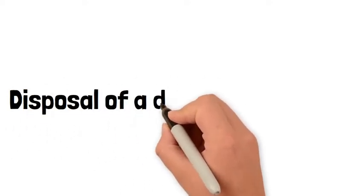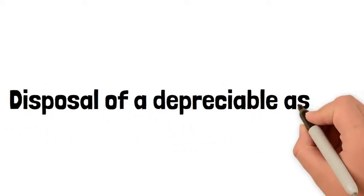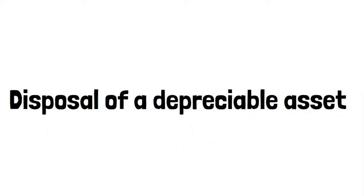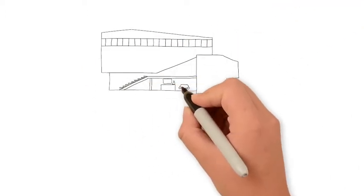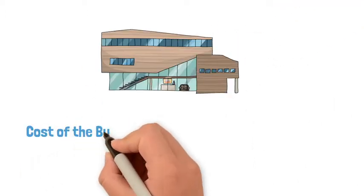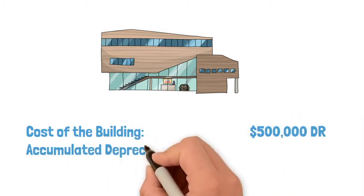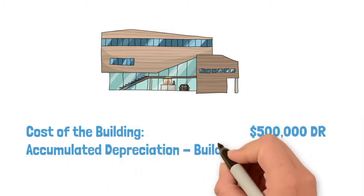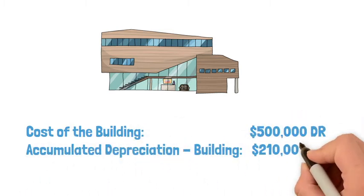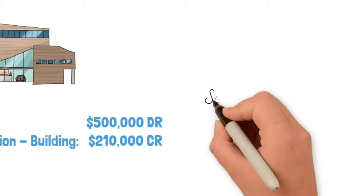In this video, I'm going to show you the general entry for disposing a depreciable asset. Suppose we have a building. The cost of the building is $500,000 and the cumulative depreciation is $210,000.